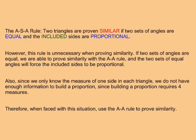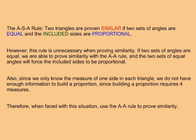The ASA rule states that two triangles are proven similar if two sets of angles are equal and the included sides are proportional. However, this rule is not necessary to prove similarity. If two sets of angles are equal, we can prove similarity with the AA rule, and the two sets of equal angles will force the included sides to be proportional. Also, since we only know the measure of one side in each triangle, we do not have enough information to build a proportion — building a proportion requires four measures. Therefore, whenever we are faced with this situation, we can use the AA rule instead to prove or disprove similarity.